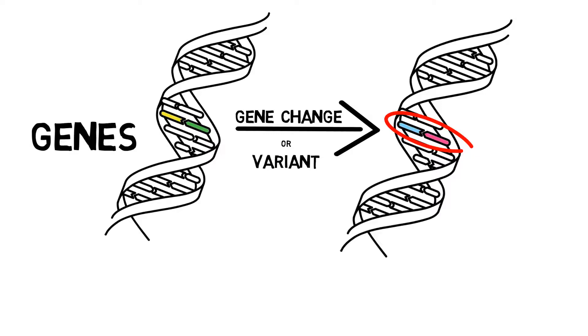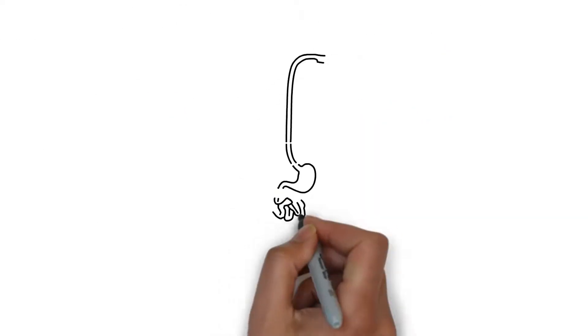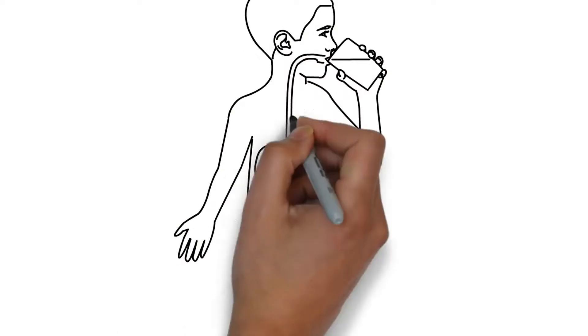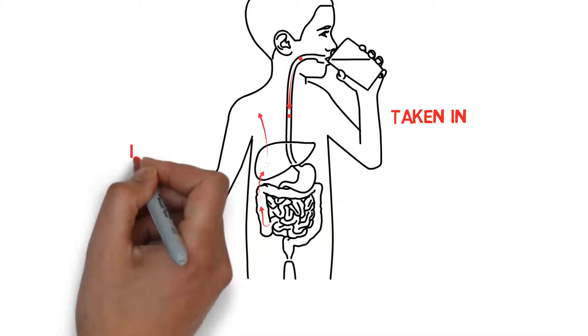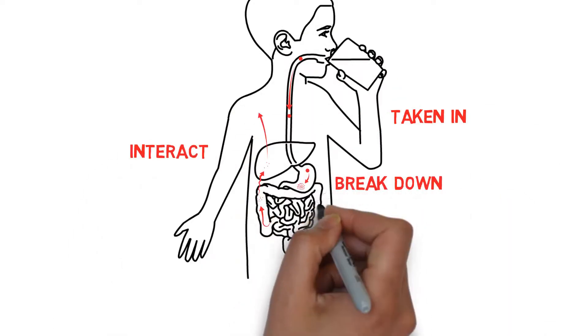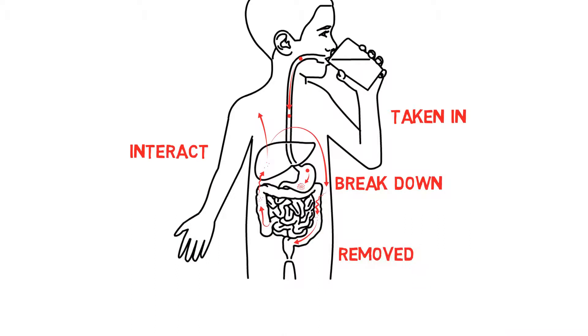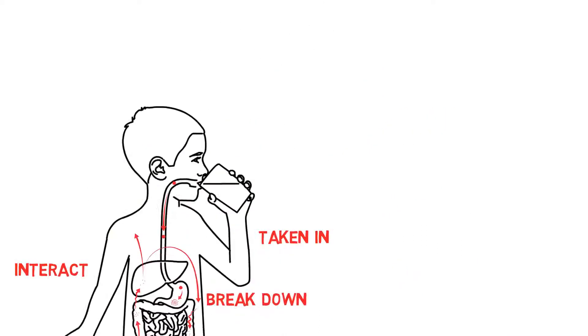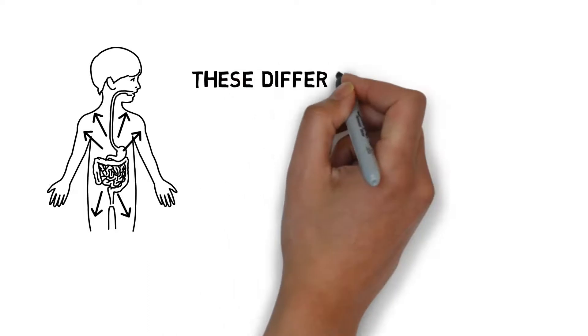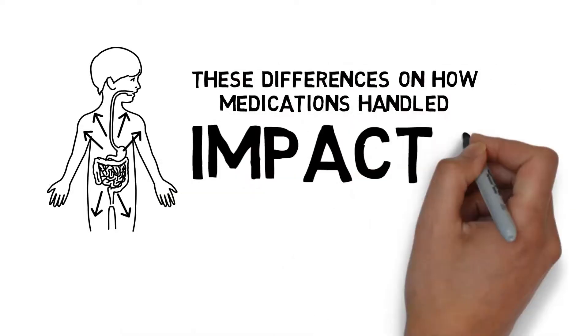The vast majority of us have gene variants that can affect how our bodies respond to certain medications. These variants can determine how medications are taken in or absorbed, interact, break down, or are removed from our body. These differences in how medications are handled by our body impacts our response to them.